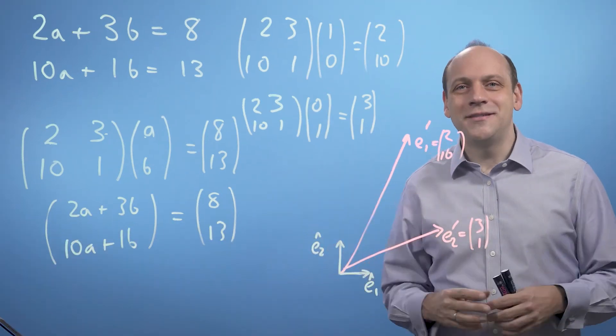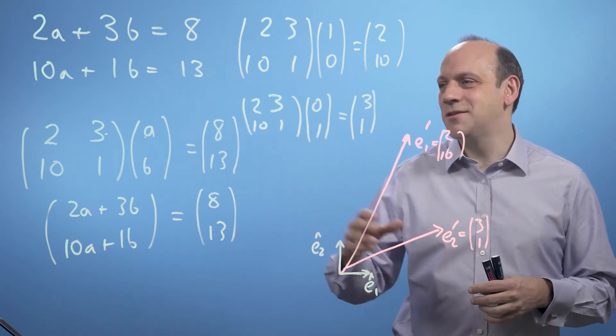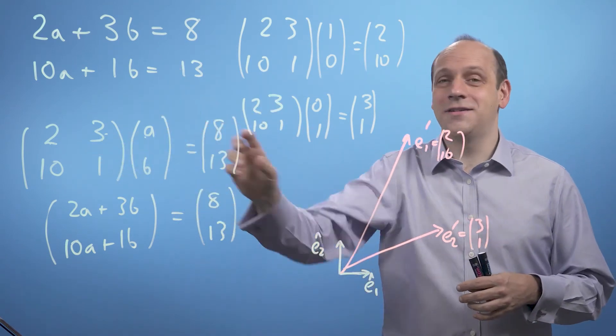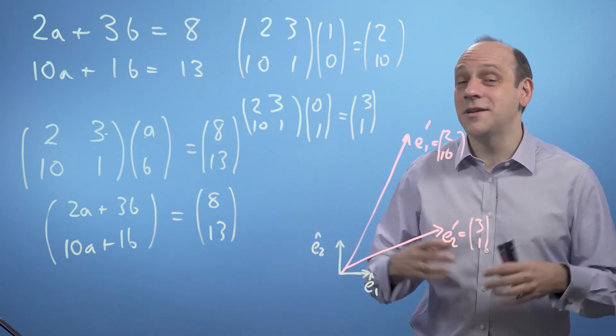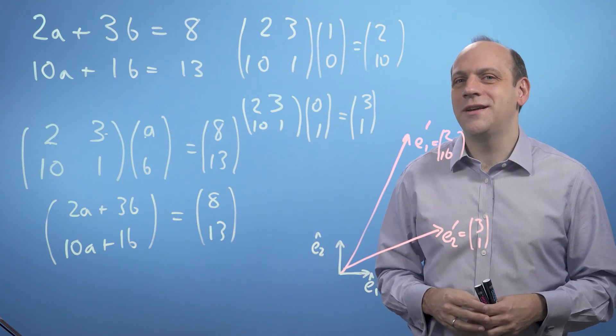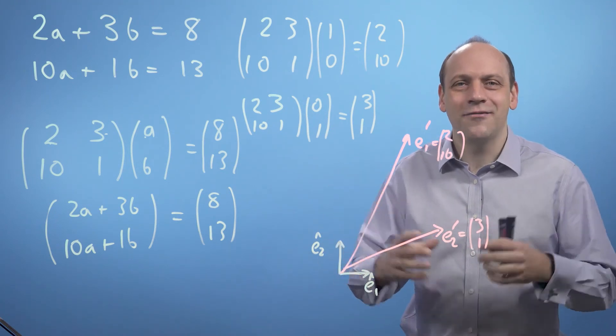So, this is interesting. There seems to be some kind of deep connection between simultaneous equations, these things called matrices, and the vectors we were talking about last week. And it turns out the key to solving simultaneous equation problems is appreciating how vectors are transformed by matrices, which is the heart of linear algebra.